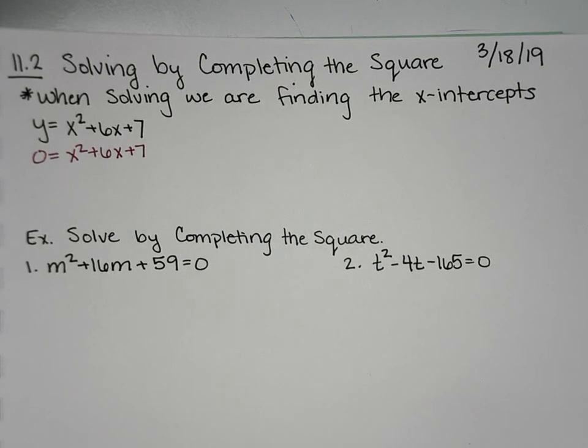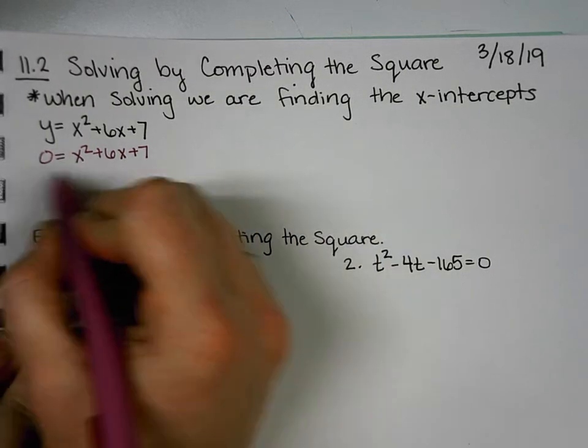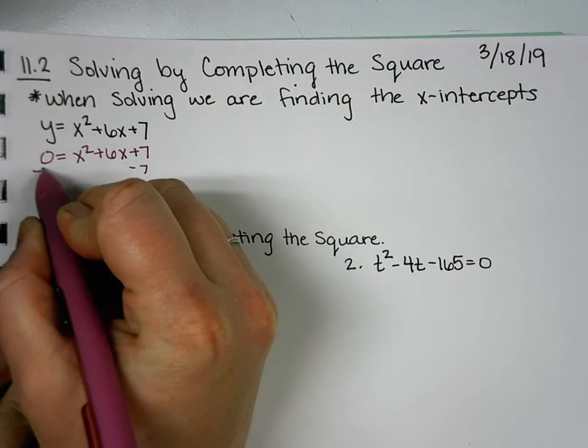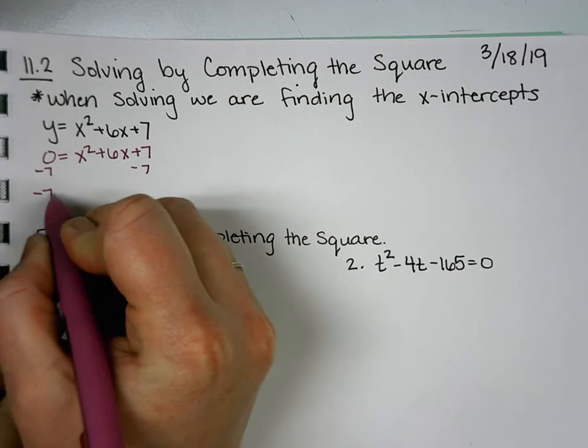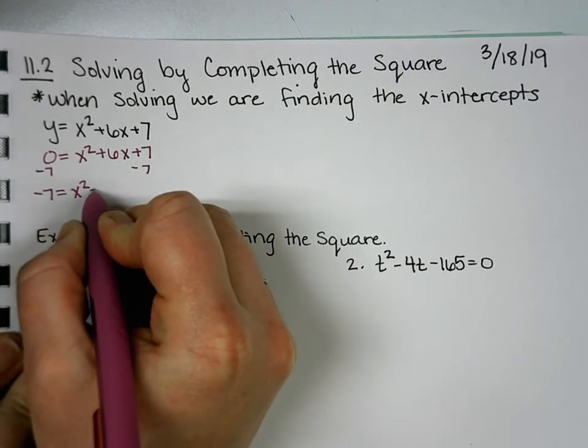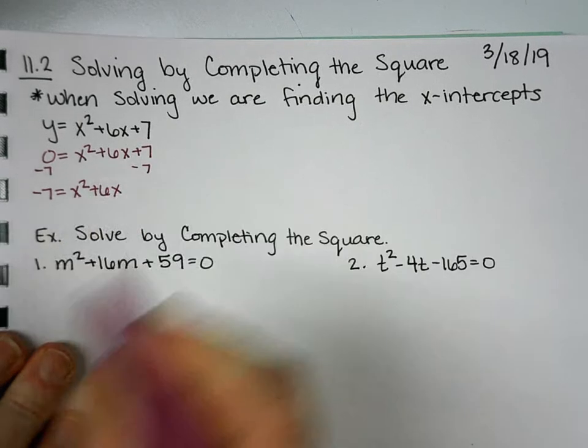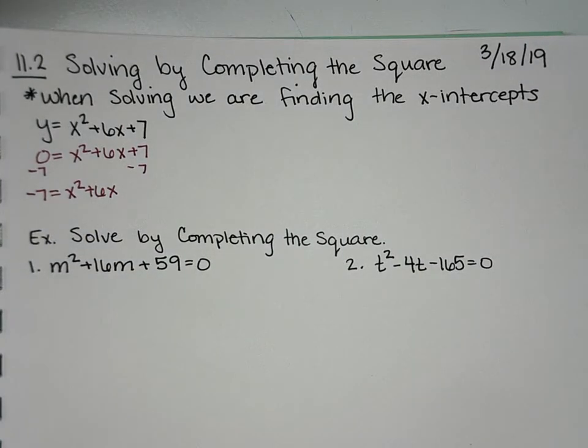So what was our first step to completing the square? Move the constant, so we're going to subtract 7. So negative 7 equals x squared plus 6x. Okay, what did we do after that?